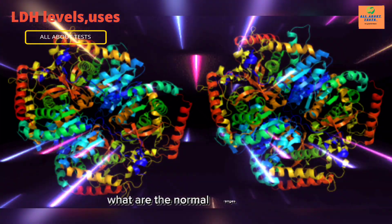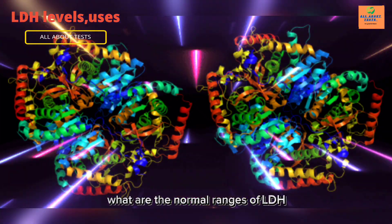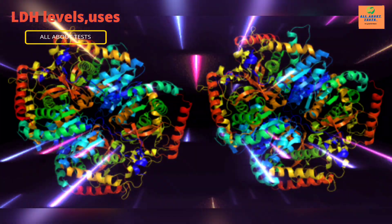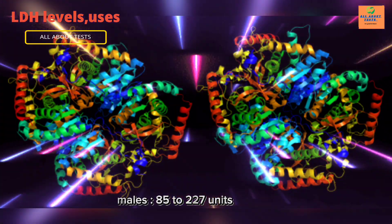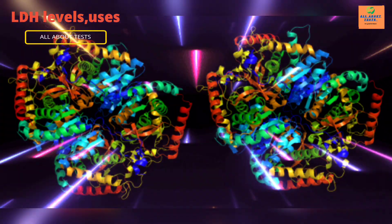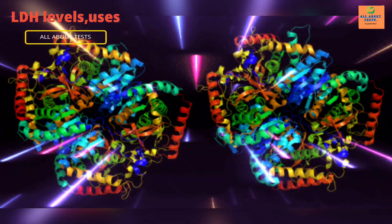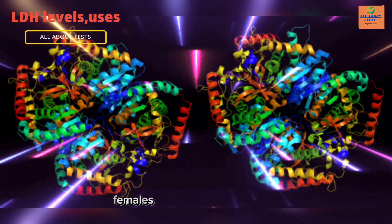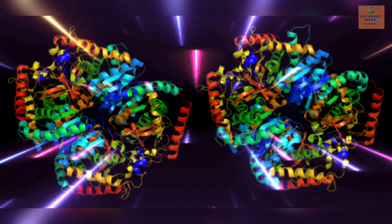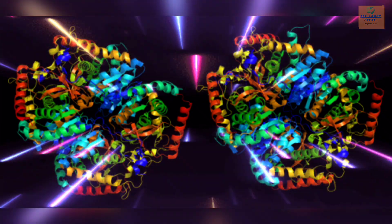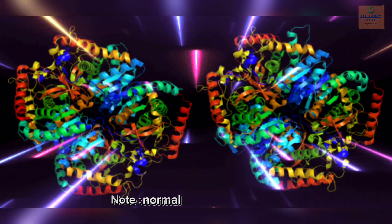What are the normal ranges of LDH? Males: 85–227 units per liter. Females: 81–234 units per liter. Normal ranges can vary by lab.